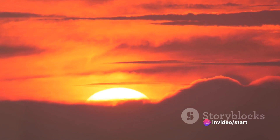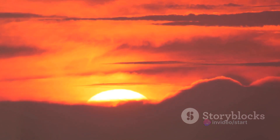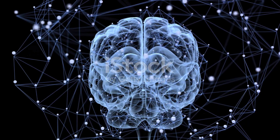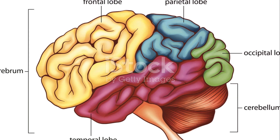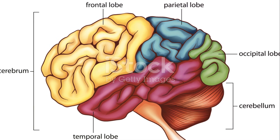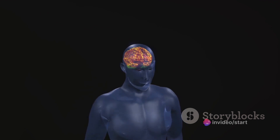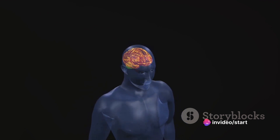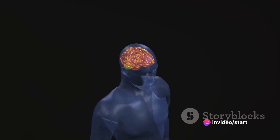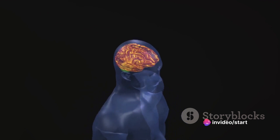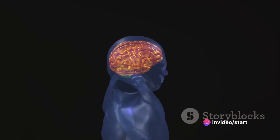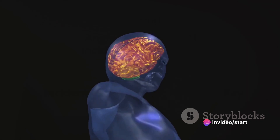Yes, that sunset you're admiring is actually upside down in your eyes. Surprising, isn't it? But if it's upside down, how do we see it the right way up? Well, your brain steps in and flips the image right side up. The brain's role in image perception is truly an unsung hero in our daily lives.